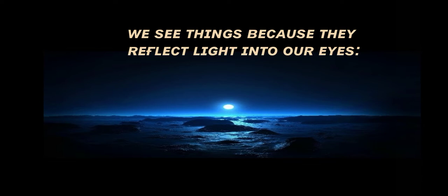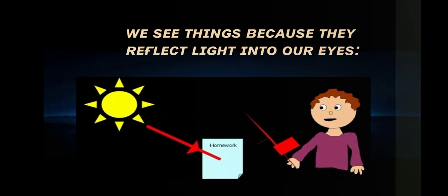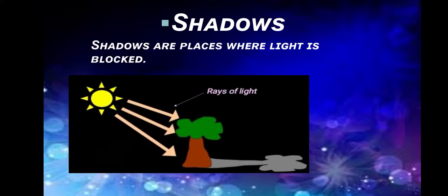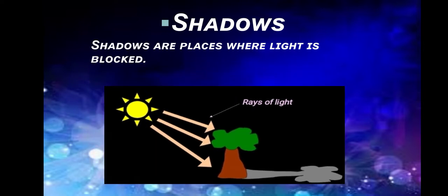We see things because they reflect light into our eyes. Shadows are places where light is blocked. As you can see in the diagram, the sun's rays are coming and those rays are blocked by the tree, so the shadow of the tree is formed.